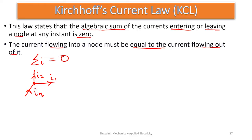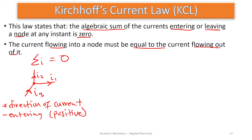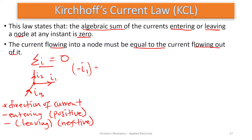When we use the algebraic sum, we take into consideration the direction of the currents — whether it is going in or coming out. Currents entering are taken as positive, and currents leaving the node are taken as negative. So i1 is leaving — negative i1 — i2 is also leaving — negative i2 — and i3 is entering — positive i3. Their sum gives zero. That is the Kirchhoff's Current Law expression for this node.